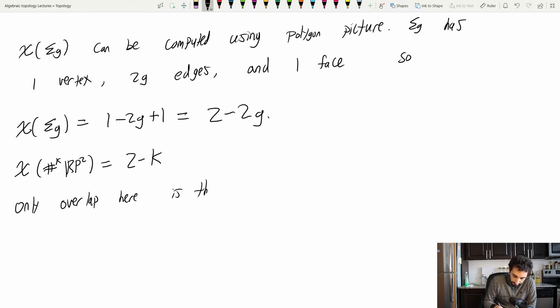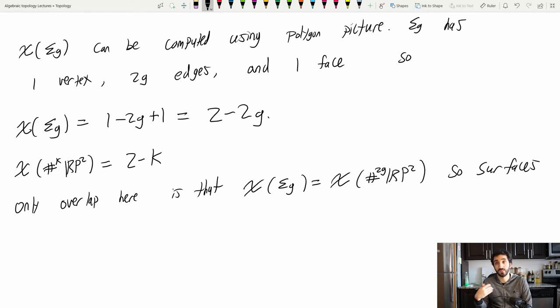So the only overlap here is that χ of sigma g is equal to χ of the connect sum of 2g RP2s. And so surfaces, we've found so many ways to classify surfaces. Here's one of the best ones. They're classified by orientability and Euler characteristic.